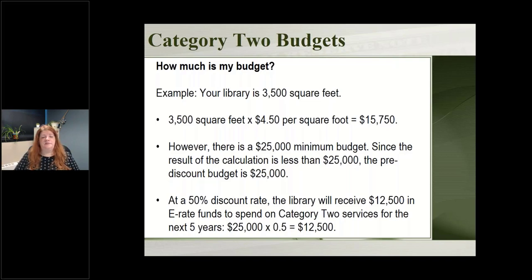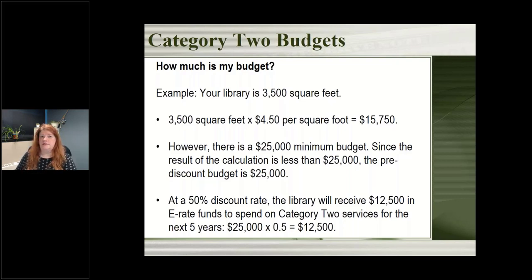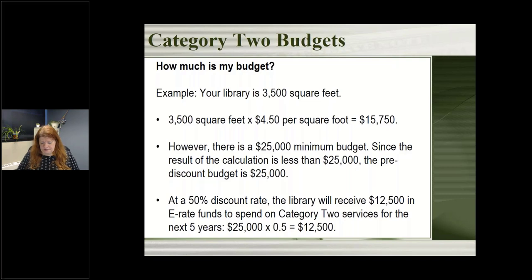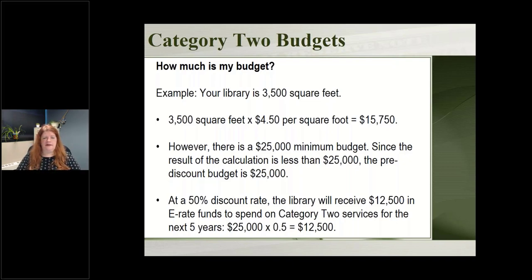USAC's online E-Rate system will keep track of this for you in your account. You tell them your square footage, the system does the math, shows your budget amount, and each year deducts from it as you apply for category two funding, letting you know how much you have left for future years. Category two can be a little confusing, but doing the math really helps — once it's all done, you just know how much you have to spend.